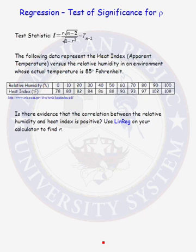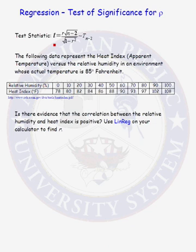In this lesson, we will calculate and do a test of significance for rho. Rho is the true correlation between two quantitative variables, while r is the sample correlation. In order to do a test of significance, we need a test statistic. Our test statistic equals r times the square root of n minus 2 divided by the square root of 1 minus r squared. This test statistic has a t-distribution with n minus 2 degrees of freedom.